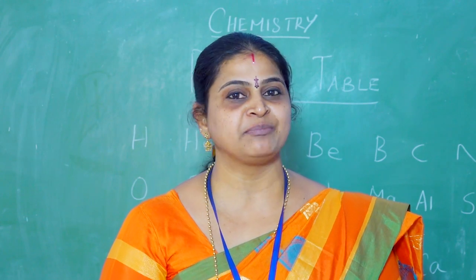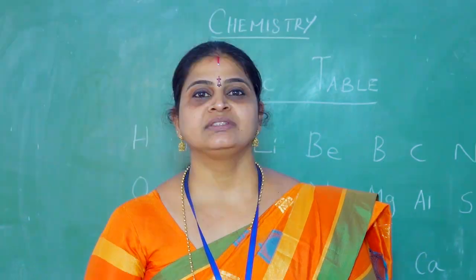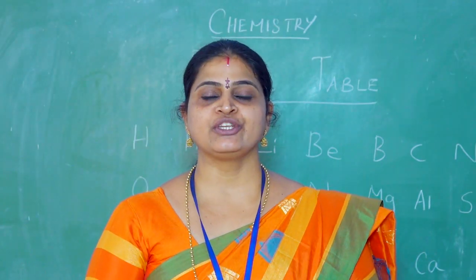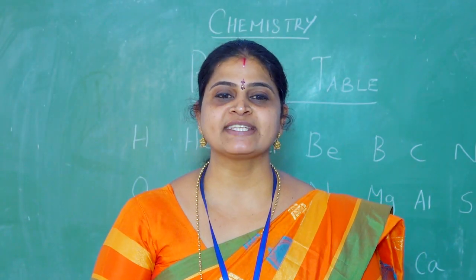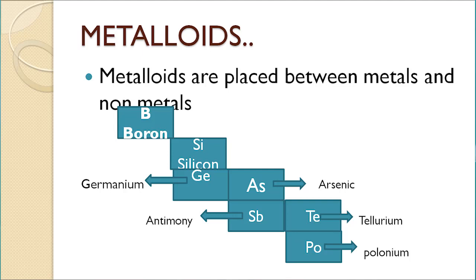Hope you enjoyed learning the periods. Now we are going to learn about metalloids — the transition phase between metals and non-metals. The three main examples are Boron, Silicon, and Germanium. You can focus on these first three examples: Boron, Silicon, Germanium.